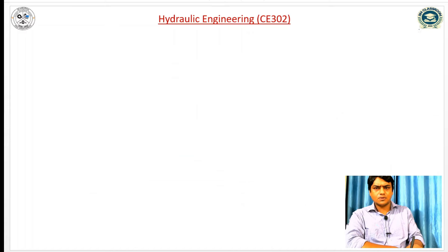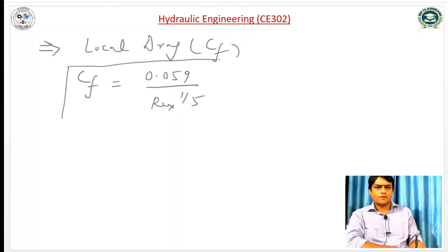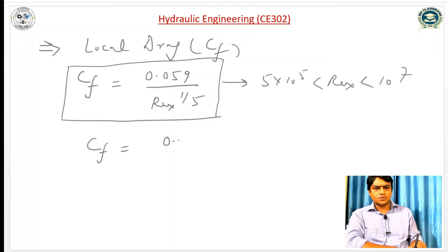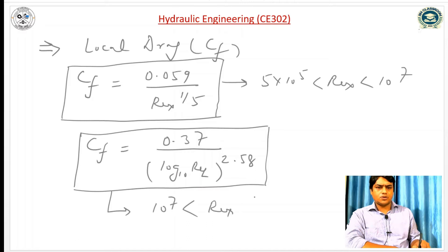Similarly, the expression of local drag coefficient Cf: Cf = 0.059 / (Re_x)^(1/5), and this formula is applicable when the Reynolds number lies between 5×10⁵ to 10⁷. Otherwise, Cf = 0.37 / [log₁₀(Re_L)]^2.58, and this formula is applicable when the Reynolds number lies between 10⁷ to 10⁹.